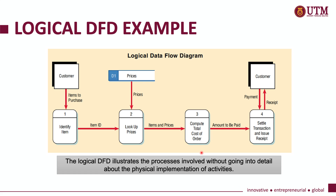This is an example of a logical data flow diagram. All of the processes involved show the business process of the organization, where a customer who wants to purchase a system needs to identify the system. The price can be referred to the price data store, and then the system computes the total cost of the order, goes through the transaction, issues a receipt, and gives the receipt back to the customer after receiving payment. Notice that the process does not go into any details about the physical implementation of the activities.